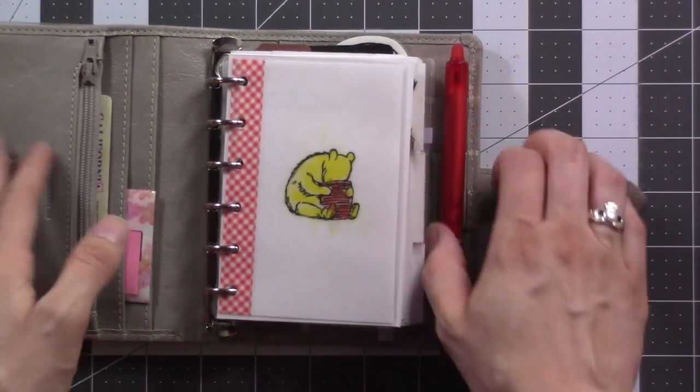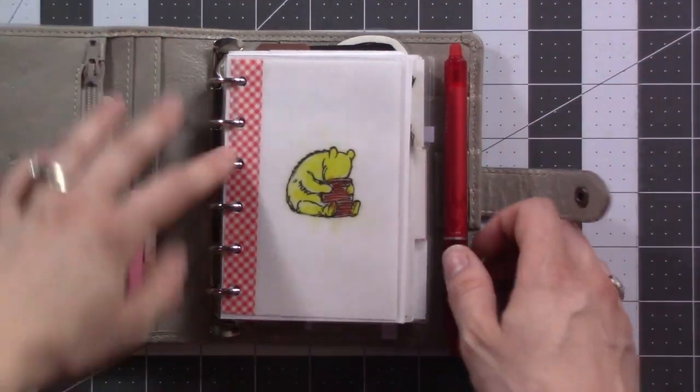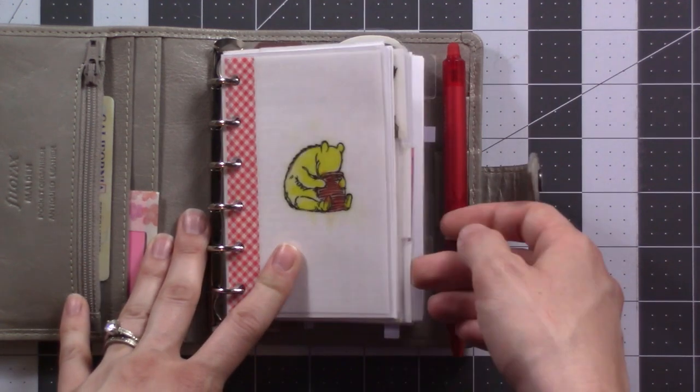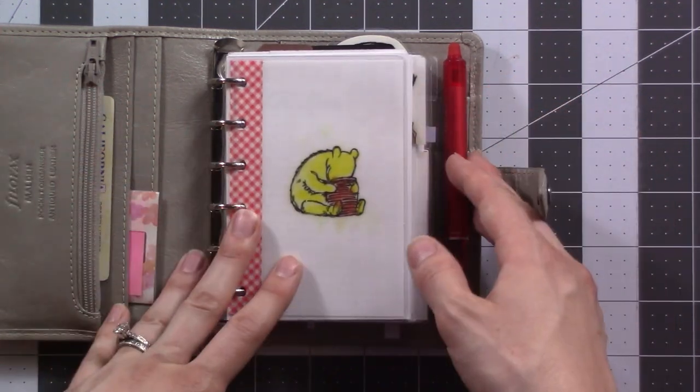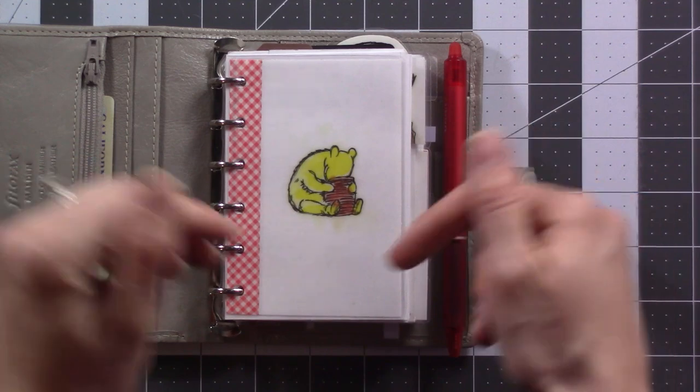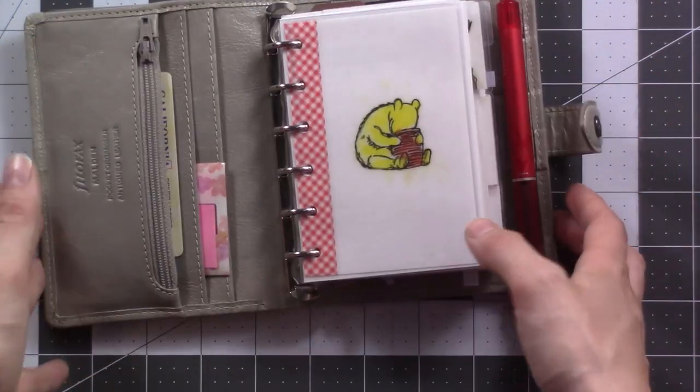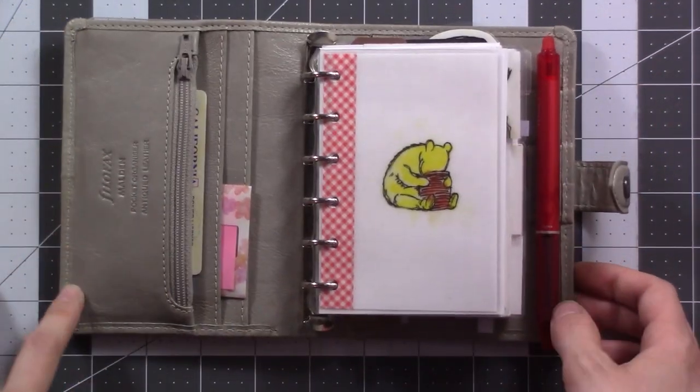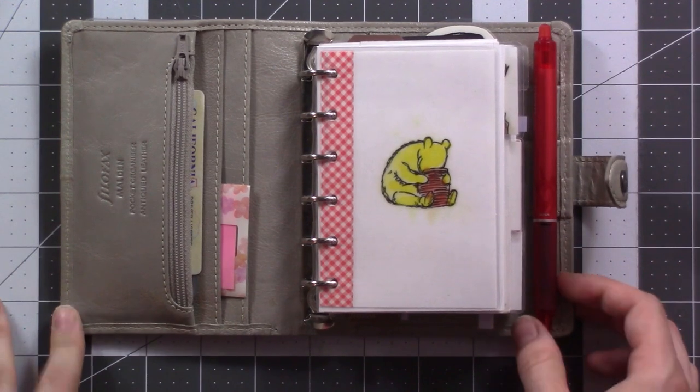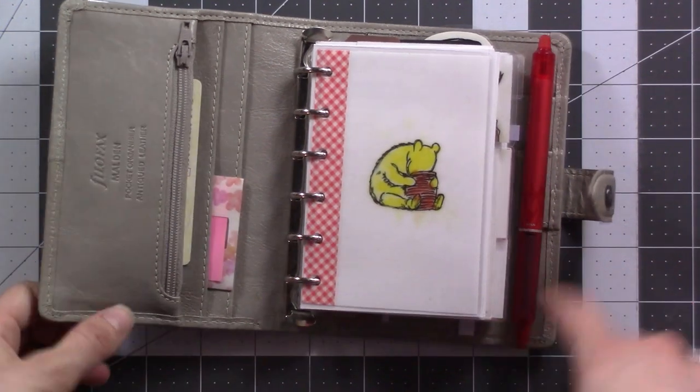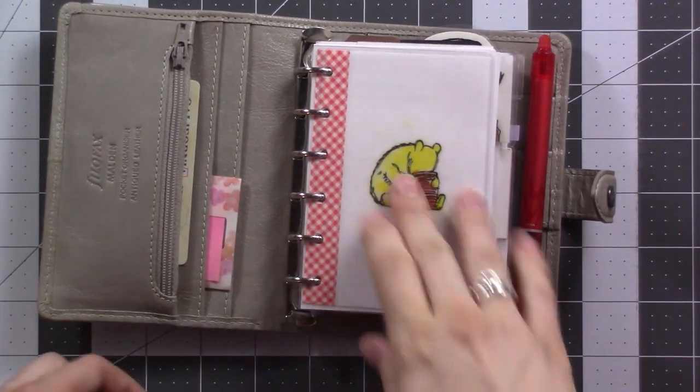If anyone has a solution that's like a decent pen loop that goes well with the pocket Filofax, let me know, comment below, send me a link or something. Because I would be willing to try any sort of weird product. Bonus points if it's something that can fit like three or four pens, because I have like a couple highlighters that I'd like to keep with.